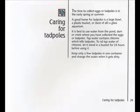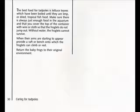The time to collect eggs or tadpoles is in the early spring or summer. A good home for tadpoles is a large bowl, a plastic bucket, or best of all, a glass aquarium. It is best to use water from the pond, dam, or creek where you collected the eggs or tadpoles. Tap water contains chlorine, which kills tadpoles; to rid tap water of chlorine, let it stand in a bucket for 24 hours before using it. Keep only a few tadpoles in one container and change the water when it gets dirty. The best food for tadpoles is lettuce leaves which have been boiled until limp, or dried tropical fish food. Make sure there is always just enough food in the aquarium, and cover the top of the container with wire or cloth so that the froglets do not jump out. When their arms are starting to appear, provide a raft or bench on which the froglets can climb or rest. Return the baby frogs to their original environment.